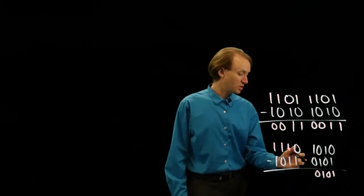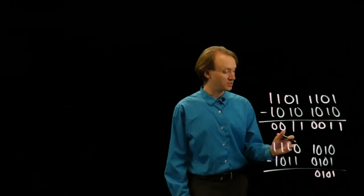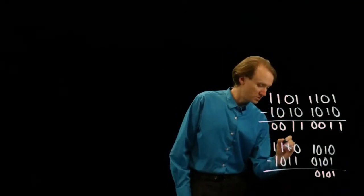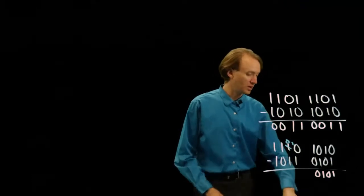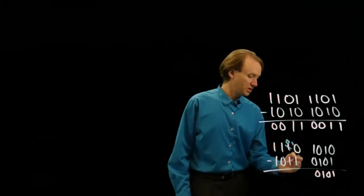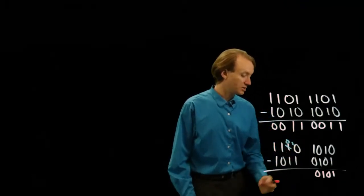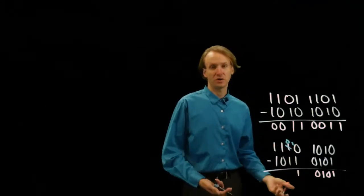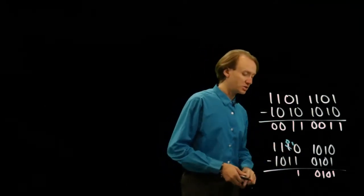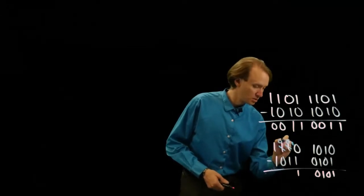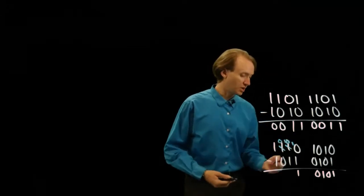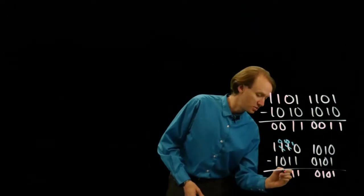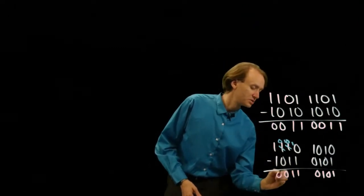Now I've got 0 minus 1. Again, I need to borrow something. So this will become a 0, and now I've got a 1 there. 10 minus 1 gives me 1. 0 minus 1 — I have to borrow something again. So 10 minus 1 leaves me with 1. Then 0 minus 0 gives me 0, and 1 minus 1 is 0.